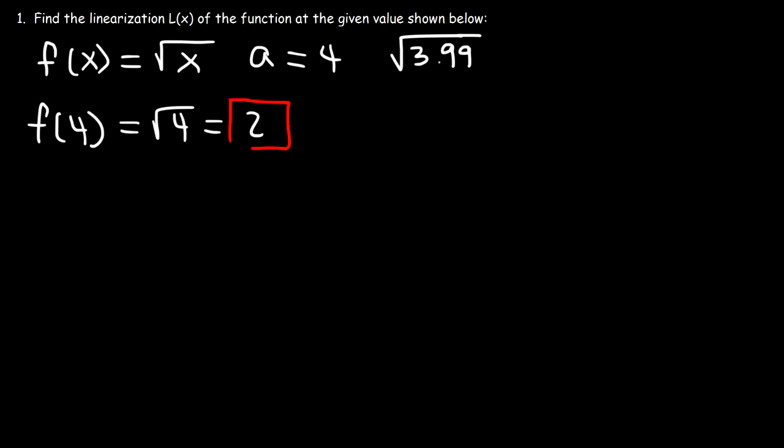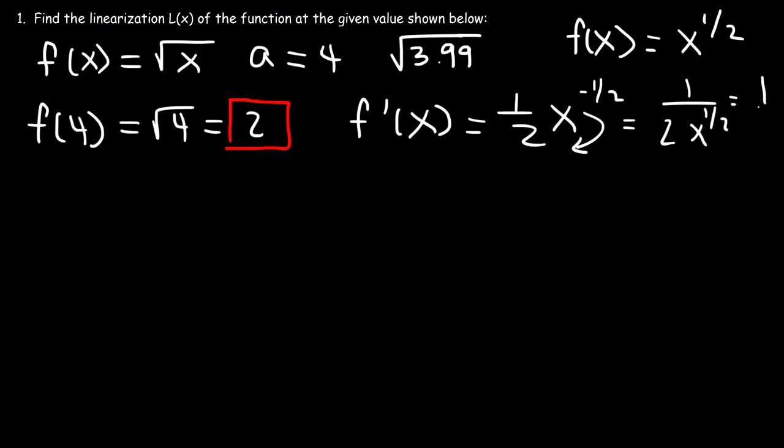Next, we need to determine f'(a). So, first, we need to calculate f'(x). Now, f(x), which is the square root of x, if we rewrite that, that's x to the 1/2. So, using the power rule, it's going to be 1/2 x to the 1/2 minus 1, which is negative 1/2. And then, if we bring the x to the negative 1/2 down, that's the same as 1 over 2 square root of x.